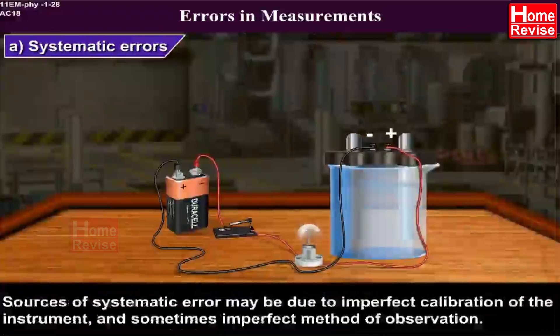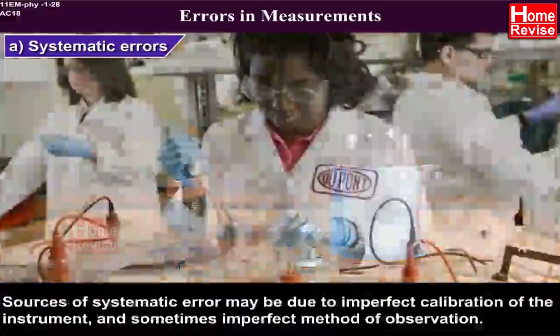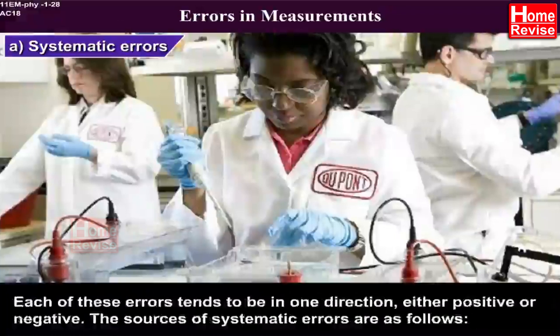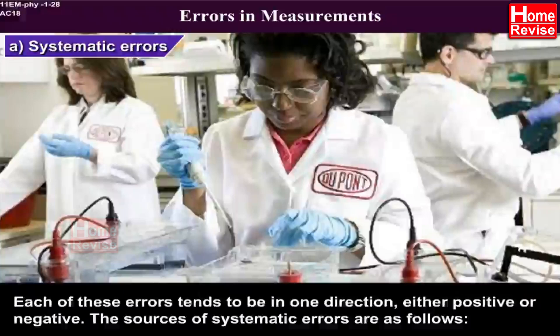and sometimes imperfect method of observation. Each of these errors tends to be in one direction, either positive or negative. The sources of systematic errors are as follows. First,